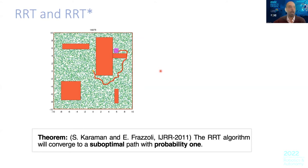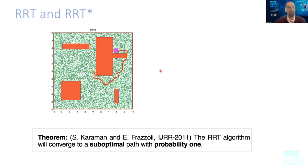For many years not many people looked at these algorithms because they have no optimality guarantees, and as mentioned in this theorem, you almost guarantee that you're going to get a suboptimal solution. Nevertheless, Karaman and Frazzoli developed a variation of RRT called RRT*, which does a little bit of manipulation with local rewiring.